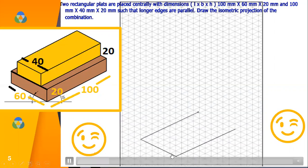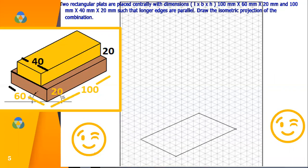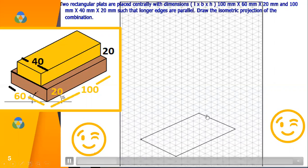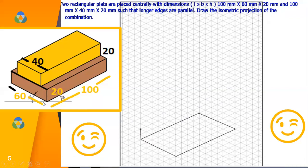And 60, 6 boxes towards your left. Again, 10 boxes towards your right and 6 boxes towards. Then you will complete the rectangle of 100 by 60 mm.